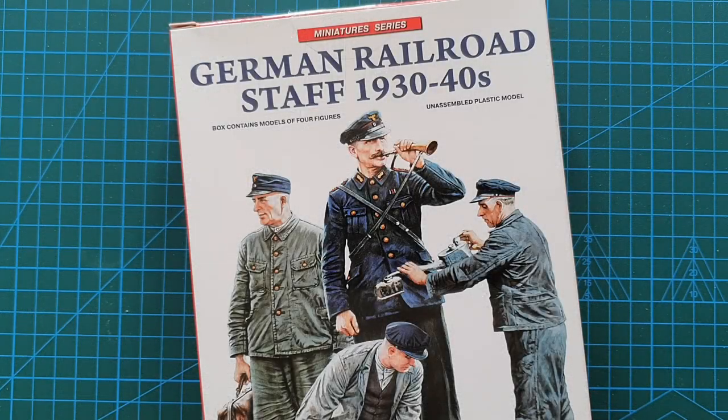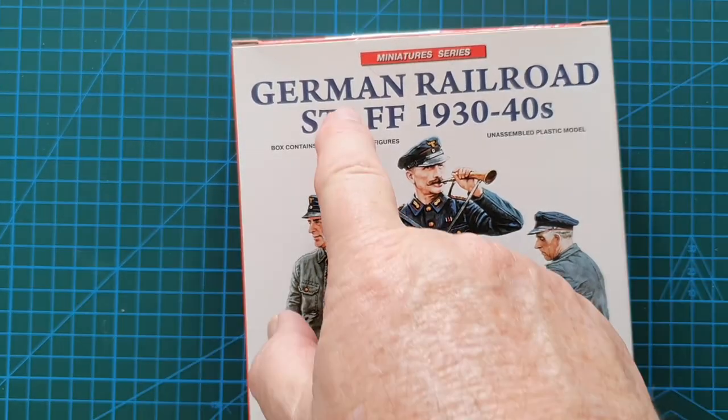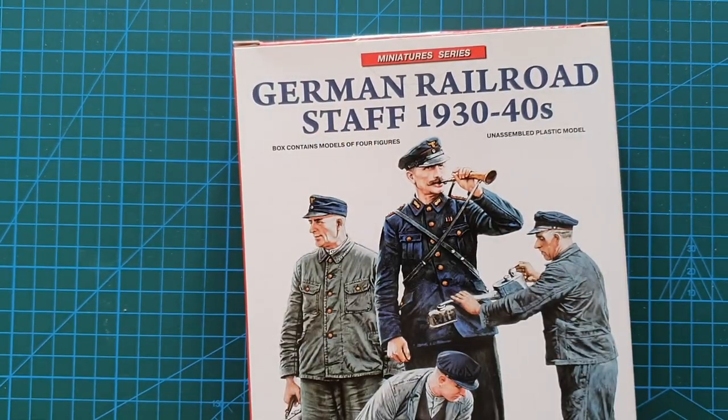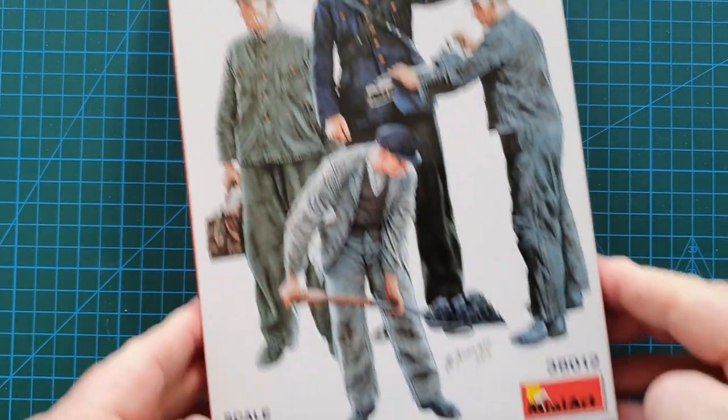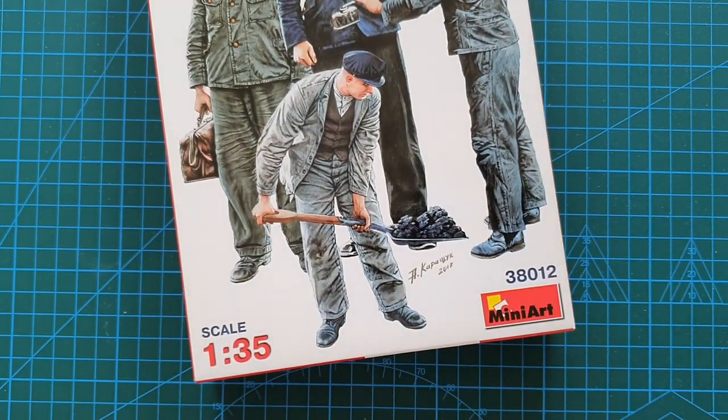Hi guys and welcome to another kit review. Today we're having a look at this particular kit - German Railroad Staff 1930-40s by MiniArt, kit number 38012, and as you can see it's in 1:35th scale.